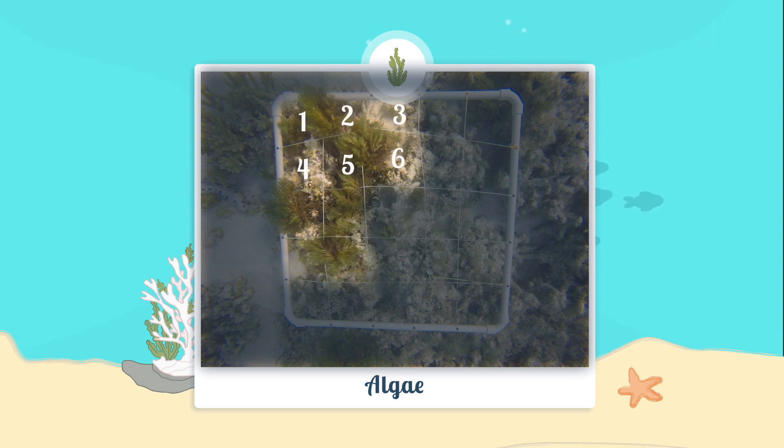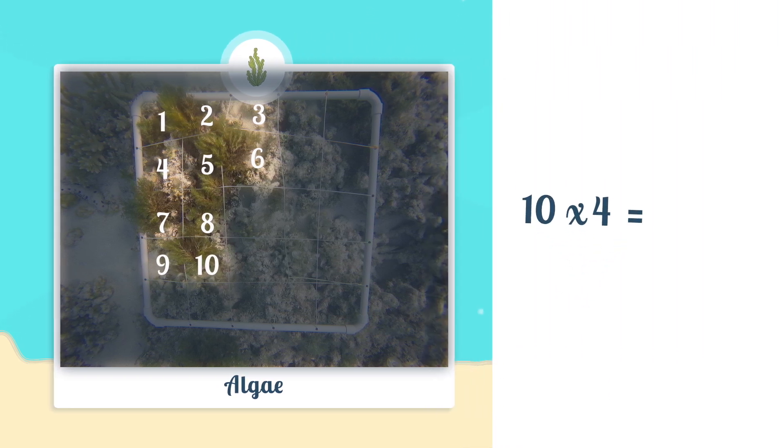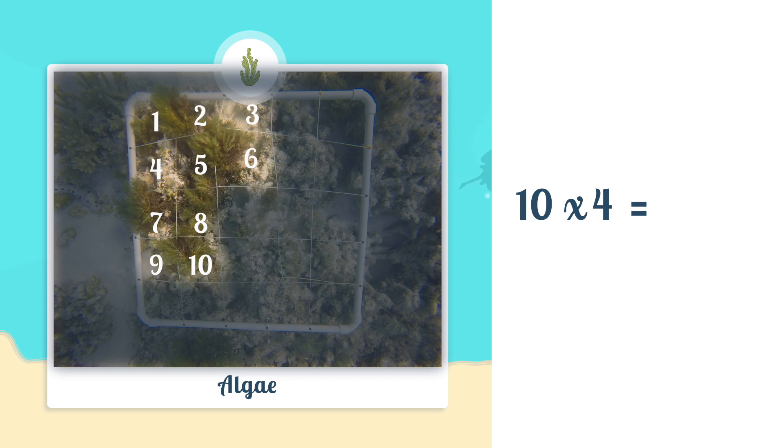Next we need to turn that number into a percent. To do this we simply multiply each number by four. This is because each quadrat has 25 squares inside it. 25 times four equals a hundred percent. So the number of squares times four equals the percent of the quadrat that's covered in algae. In this case 40 percent.